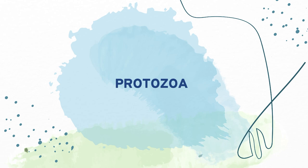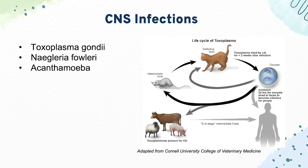Next, we have our protozoa. For CNS infections, we start with Toxoplasma gondii, which causes the triad of chorioretinitis, hydrocephalus, and intracranial calcifications — usually from cat feces or undercooked meat. Then we have Naegleria fowleri, which causes meningoencephalitis from swimming in infected water. And Acanthamoeba species causes granulomatous amoebic encephalitis.